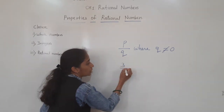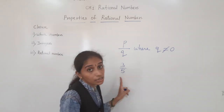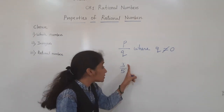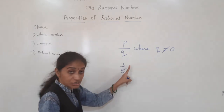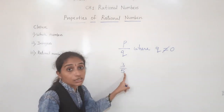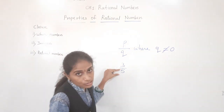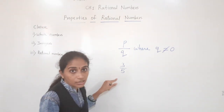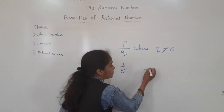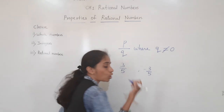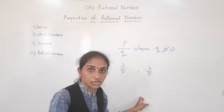For example, 3 upon 5 is called a rational number. You can say this is a fraction — yes — so we call it a rational number because Q is not equal to 0; the denominator is not 0. This number is called a rational number. It may also be negative — for example, minus 3 upon 5 is also called a rational number.